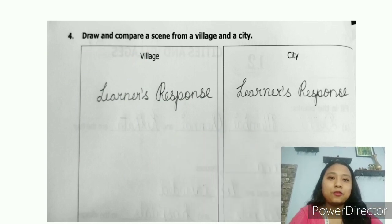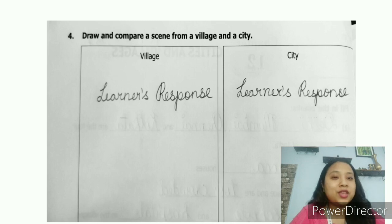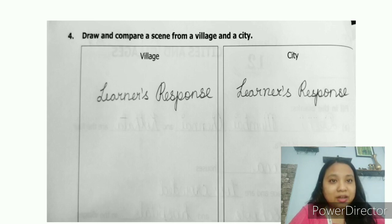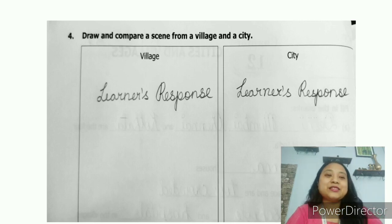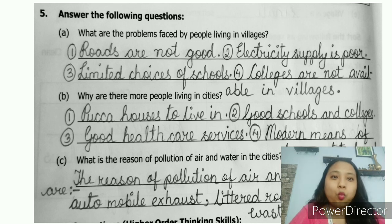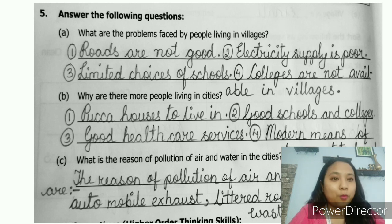Question number four: draw and compare a scene from a village and a city. This will be a learner's response — you are going to draw a scene for each and the drawing should give a good comparison between city life and village life. Moving on to question number five, answer the following questions. Question A: What are the problems faced by people living in villages? Here I have pointed out four points.